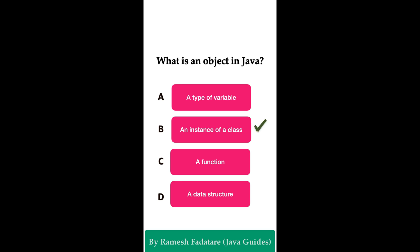The correct answer is option B. An object is an instance of a class. In Java, a class is a blueprint or template for creating objects. We typically create an object using the new keyword, and each object contains its own state and behavior. Compared to the real world, objects represent real-world entities by holding specific values and performing actions.